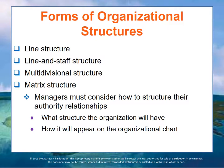Common forms we'll talk about include a line structure, meaning there's a direct line from management all the way to the people performing the tasks. A line and staff structure adds functions that help support the process. Multi-divisional structures operate individual units as semi-autonomous, but reporting into a larger structure. Lastly, a matrix structure looks at how best to operate projects while consolidating and building expertise in various functions and competencies. These structures are typically put in an organizational chart.